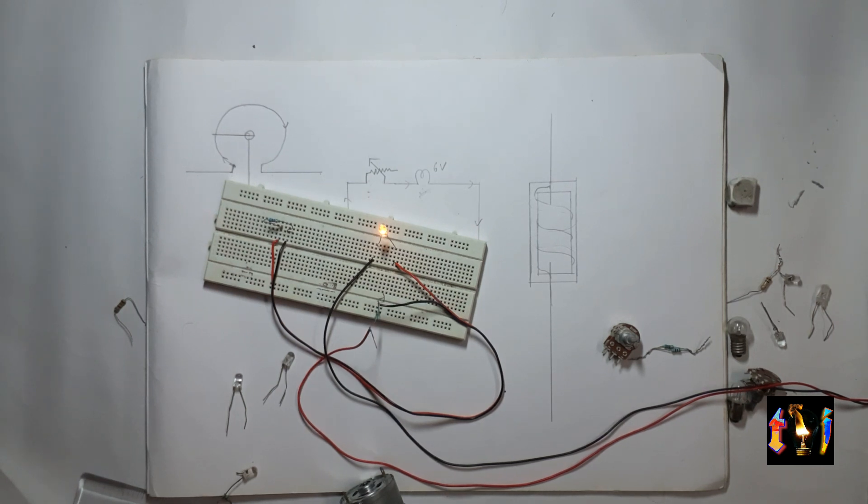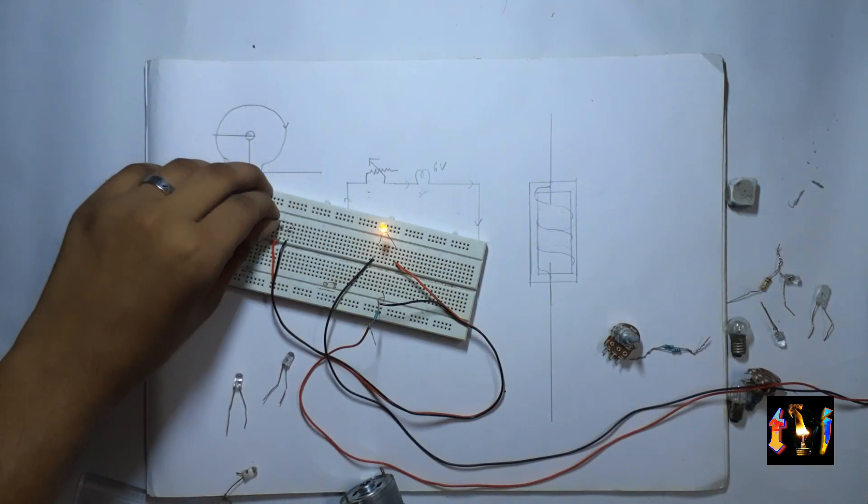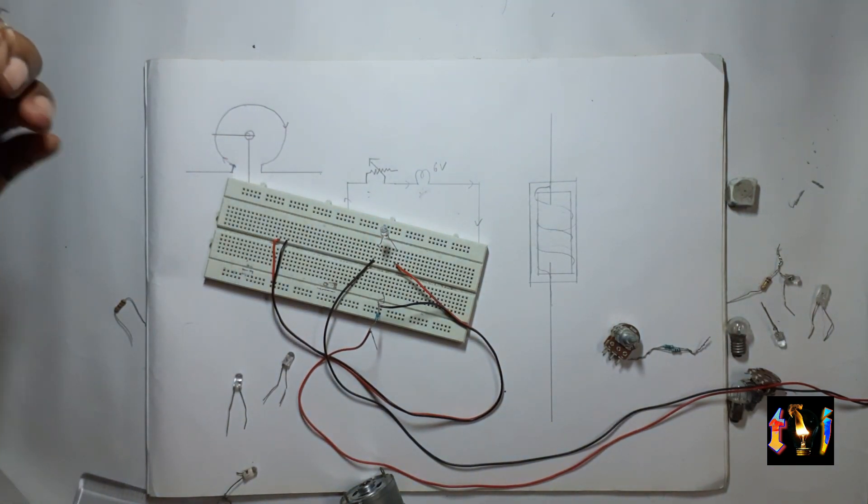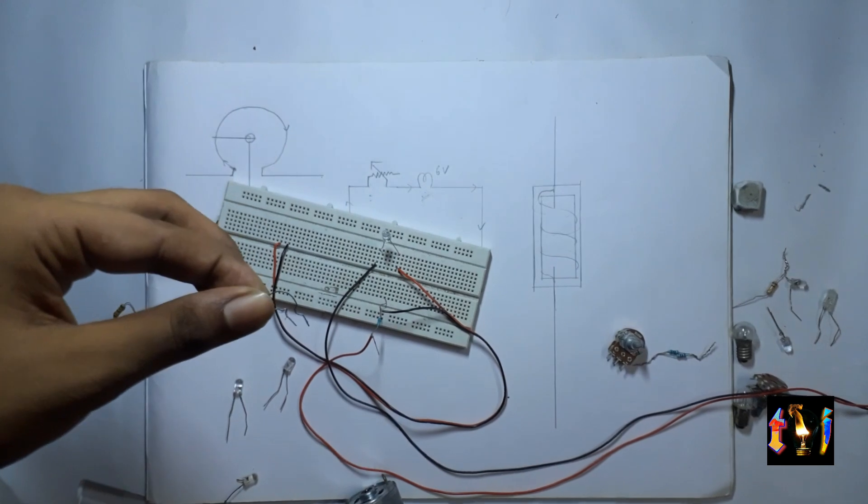So as you can see the LED is working fine and as soon as I take out this resistor the LED stops working. This was connected in series with the LED.